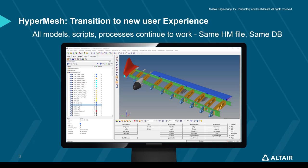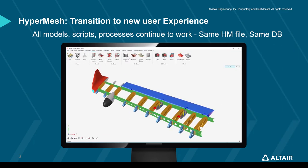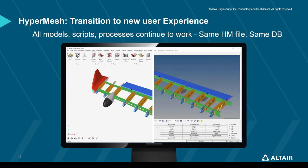The question is: how do you transition to this new interface? All models, scripts, and processes used in the classic interface will work the same in the new interface. It's the same HyperMesh file, the same database file — they work interchangeably, and you can open that exact same HyperMesh file between interfaces seamlessly. The classic interface is what we see here, and our goal is to transition to this new next-generation interface. I'll be doing most of this webinar live in the tool, relying on just a few slides.